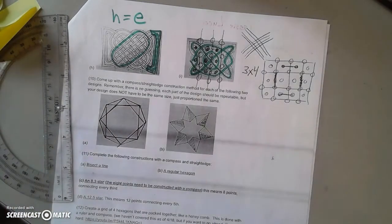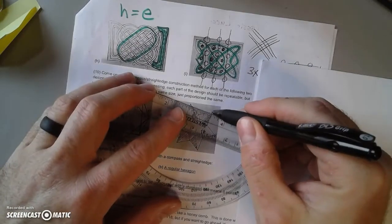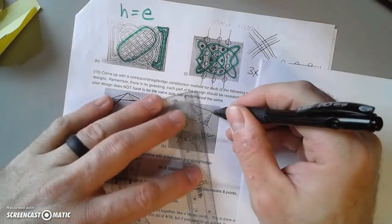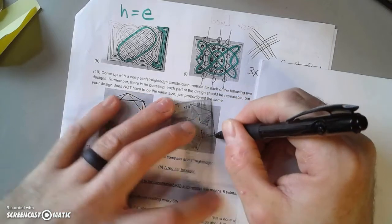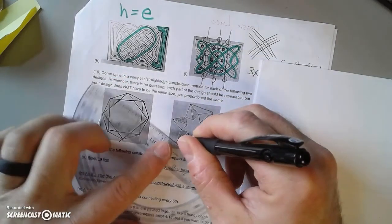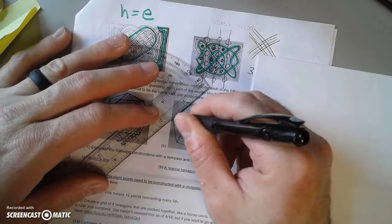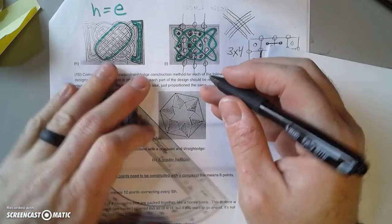Now the other one, same idea. Well, it's a six-point star, so that must be inside of a hexagon. So that hexagon, which is also inside of a circle, that's something that I can construct. Now what about all these little lines?